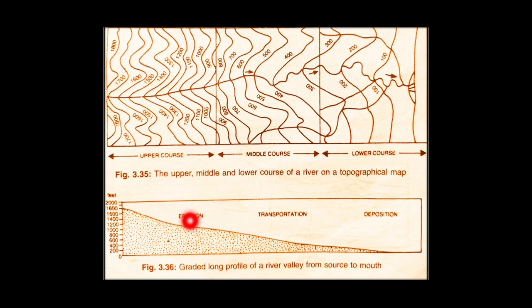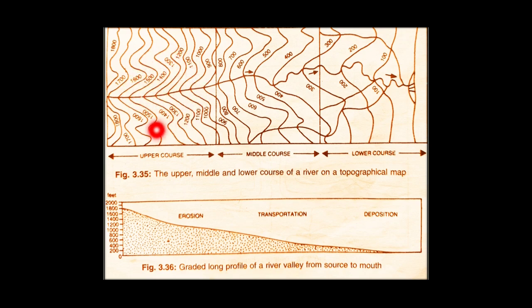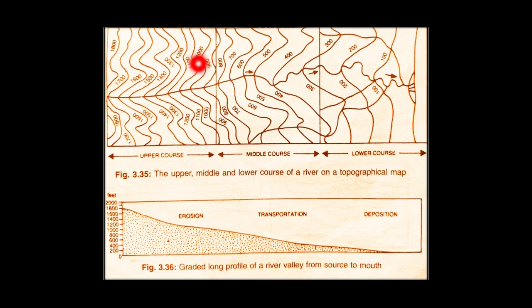In the first stage erosion is at its peak; in the second stage the focus is transportation of sediments; and in the third stage it is deposition. In the upper course the slope is steep, the river flows swiftly, valley sides are steep shown by close contour lines, and the river valley is represented by a narrow V-shaped contour. There is also a lack of tributaries joining in the upper course.